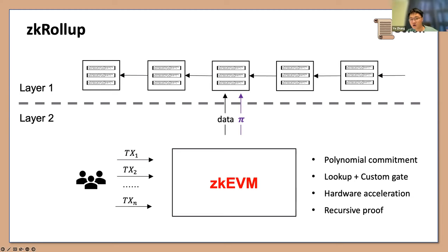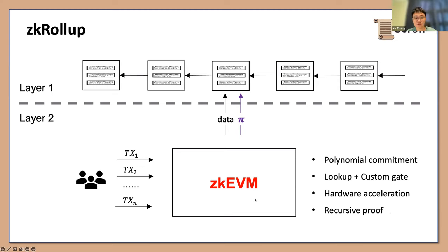Fourth, there is recursive proof, which can further reduce your on-chain verification cost. Those are four major reasons why ZK-EVM might be three orders of magnitude more efficient than two years ago, and that's why ZK-EVM is now possible.